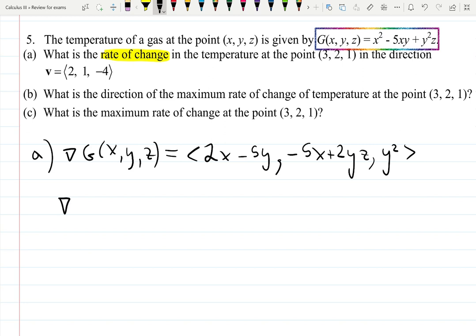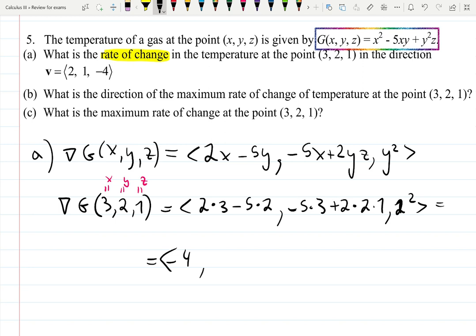Now, rate of change at the point (3, 2, 1). This vector at the point (3, 2, 1) will be plugging 3, 2, and 1 in. Let me write down: 2(3) - 5(2) and then -5(3) + 2(2)(1), and 2². That is going to be 6 - 10 which is -4, -15 + 4 is -11, and then 4.